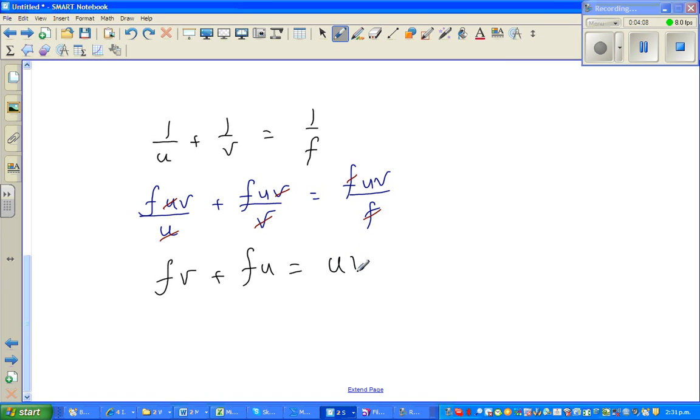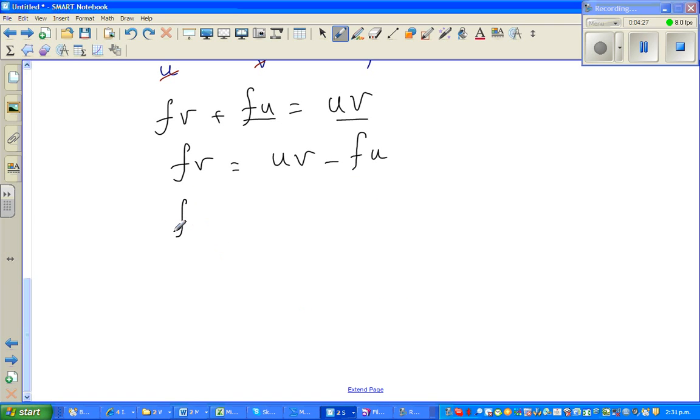So let me bring the u's together. You got fu here and uv here, so I can say fv = uv - fu. What can I factor out? You can factor out a u.